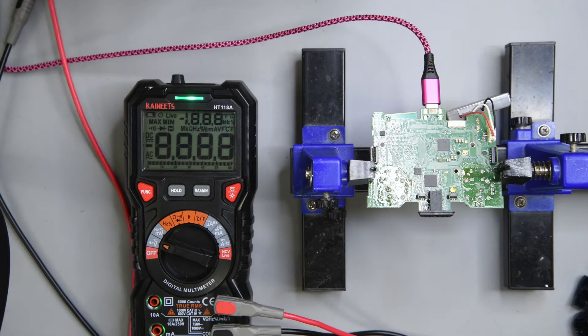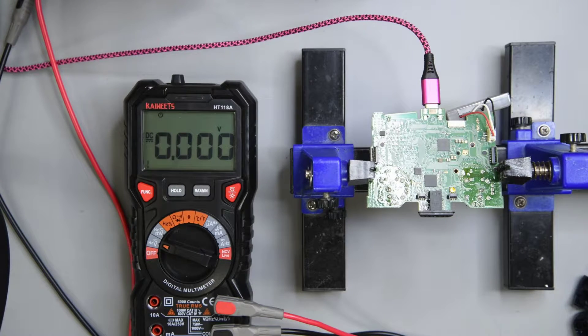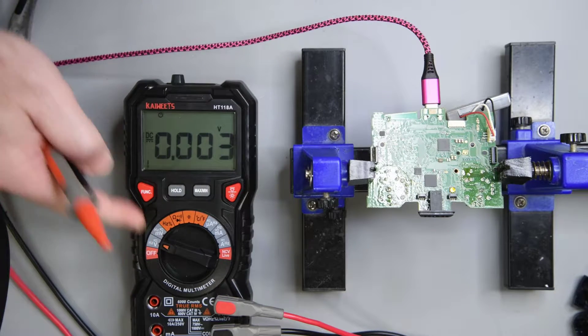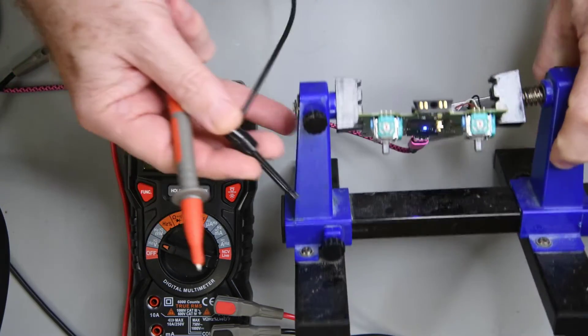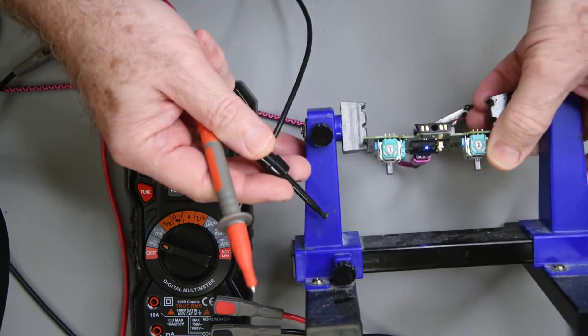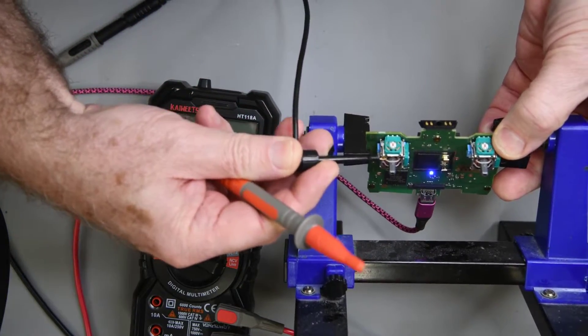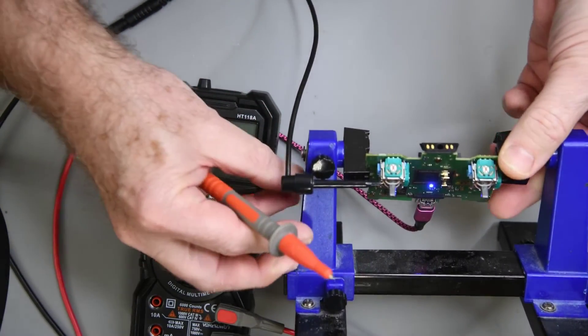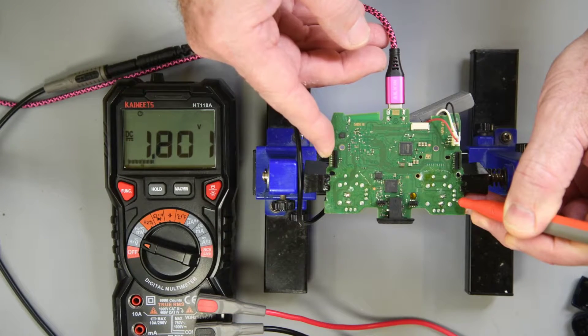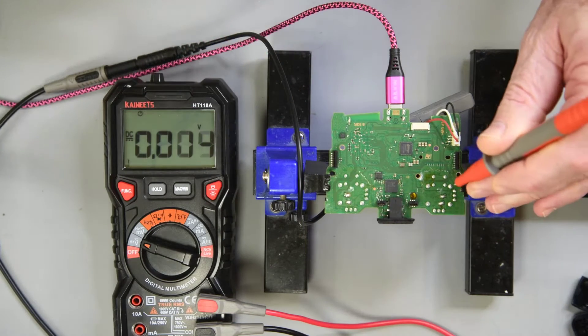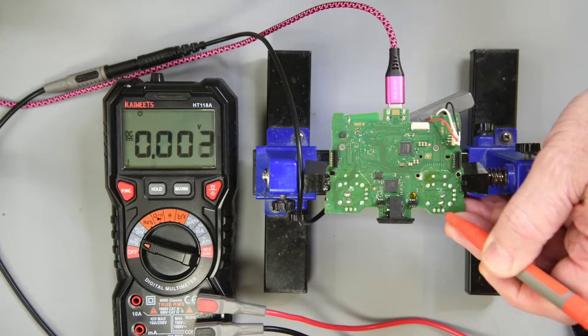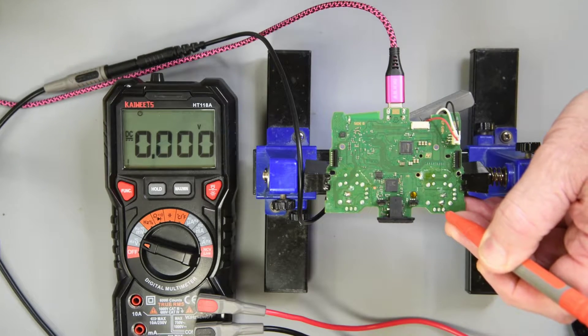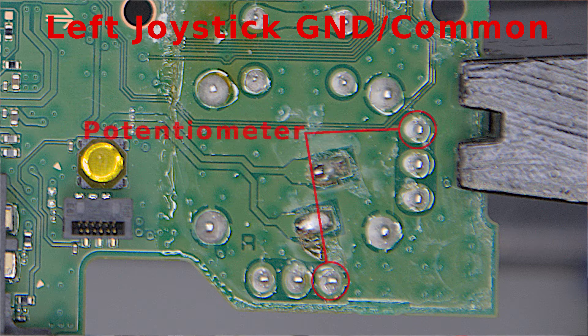Now we will need the meter set to measure DC volts, which is the mode this meter starts in when the knob is turned to the first position. A good location for the common or negative lead is the joystick frame. Either one will do, but use the frame of the one you are not working on. The common or ground pin on the joystick potentiometers are here and here. They should read very near zero volts.